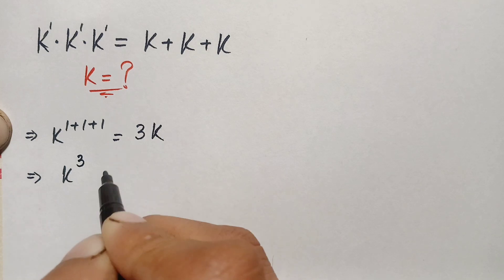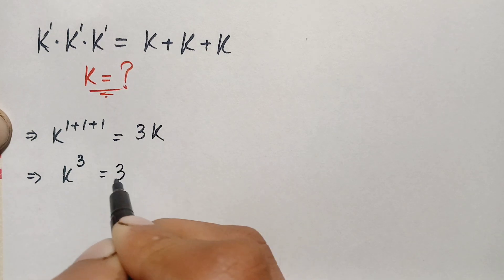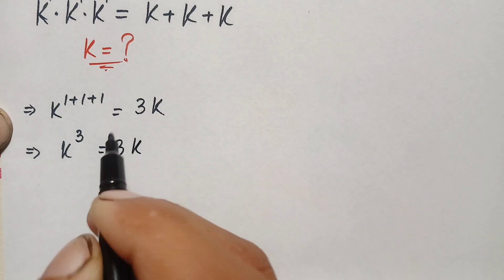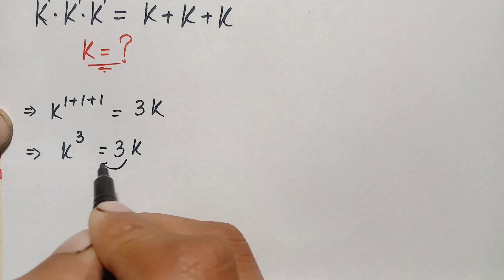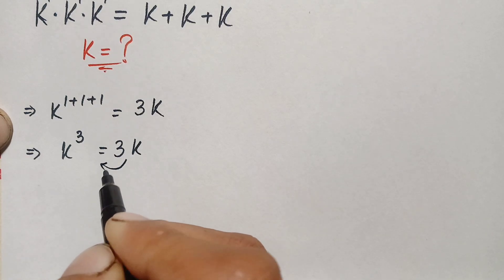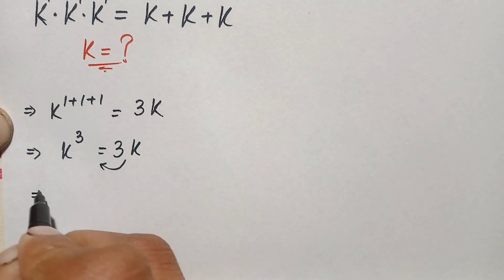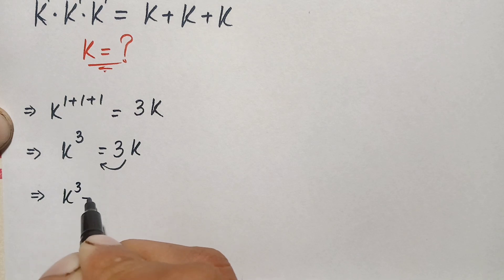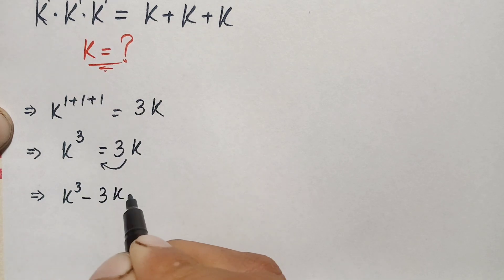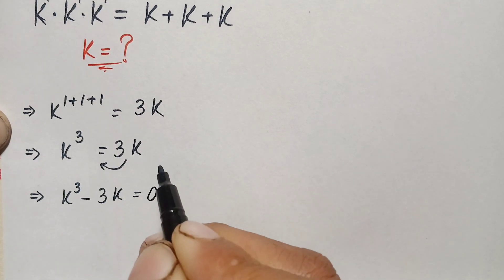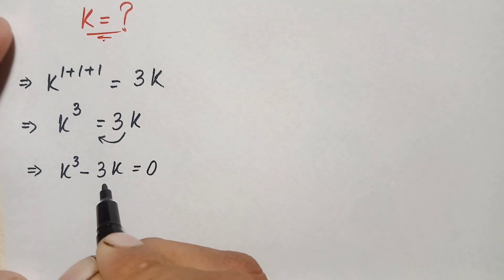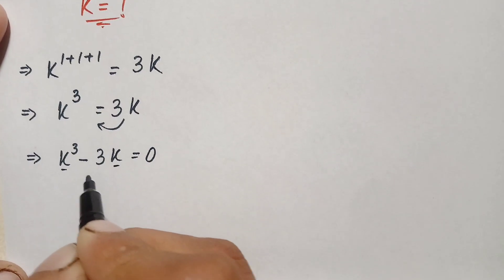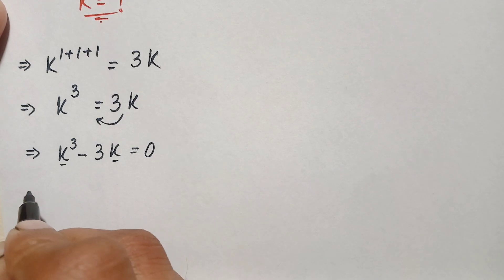So we have k cubed equals 3k. Next, we move 3k to the left hand side, making it negative 3k. The equation becomes k cubed minus 3k equals zero. In these two terms, k is common, so we take k out as a common factor.